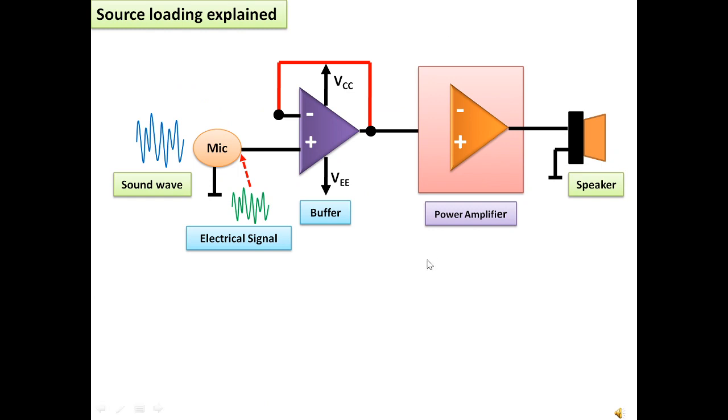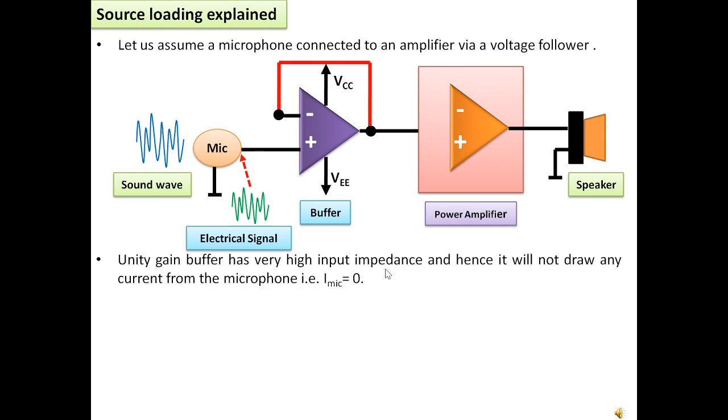Now let us assume the microphone to be connected to the amplifier via a voltage follower. The voltage follower behaves as a buffer or isolator between the microphone and the amplifier. The unity gain buffer has a very high input impedance and will not draw any current from the microphone. The current from the microphone into the operational amplifier will be negligible, here we are considering it to be zero. Let the signal voltage appear across the input of the operational amplifier be V-mic.